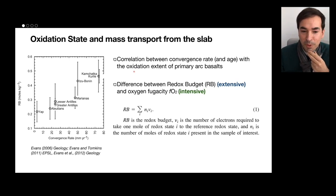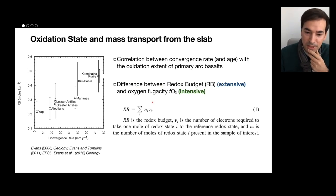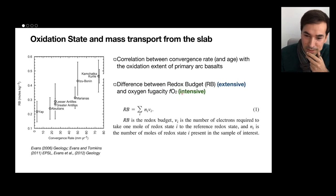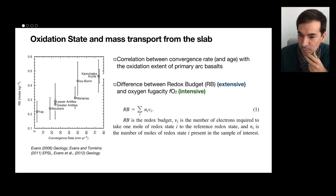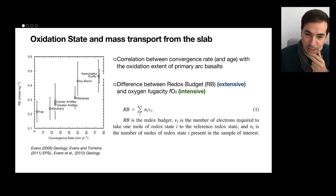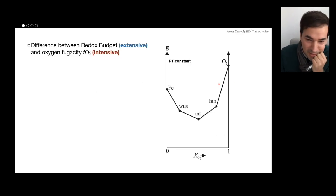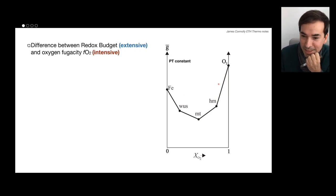It's important to make this big difference between what is the redox budget — which is an extensive variable — and what we are normally used to talking about, which is the oxygen fugacity, which is an intensive variable. I'll do my best here to very quickly summarize this, which can be perhaps a bit esoteric.